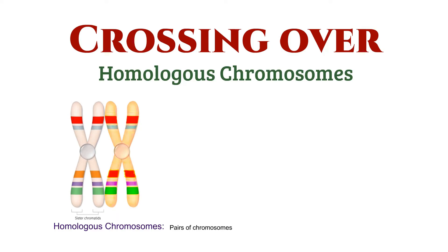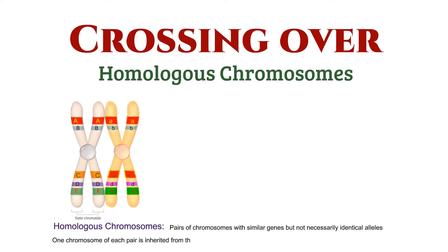Homologous chromosomes are pairs of chromosomes with similar genes, but not necessarily identical alleles. One chromosome of each pair is inherited from the mother, and the other from the father.